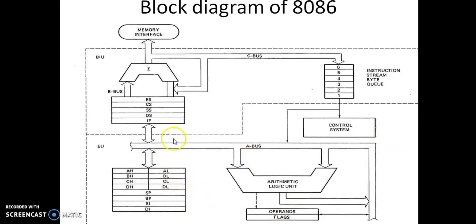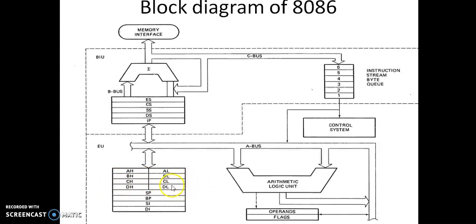Coming to the general purpose registers, these eight are called general purpose registers: AH, AL, BH, BL, CH, CL, DH, and DL. These 8 registers are 8-bit in size. You can commonly combine AH and AL as one 16-bit register named AX. Combining BH and BL gives BX, combining CH and CL gives CX, and DH and DL combined gives the 16-bit DX register. These are used to store intermediate values during processing.